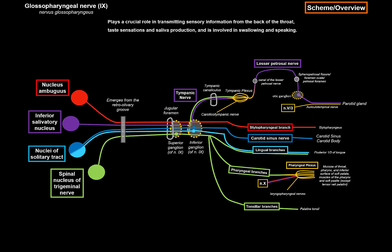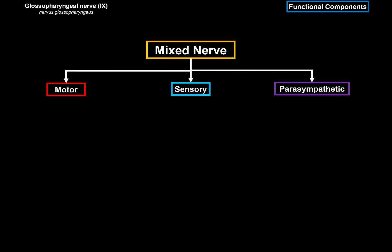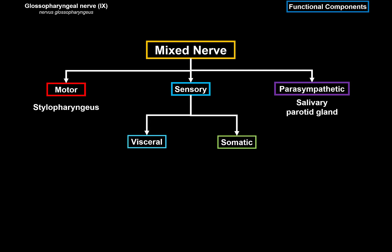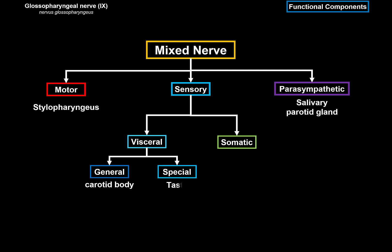This is the general scheme of the nerve. We divide it into functionally different components, which makes it easier to remember. The glossopharyngeal nerve is a mixed nerve with a motor component, sensory component, and a parasympathetic component. The motor component innervates the stylopharyngeus muscle, and the parasympathetic fibers go towards the parotid gland for saliva production. The sensory is subdivided into visceral and somatic parts. The visceral part has general visceral sensory fibers from the carotid bodies and special visceral fibers for taste from the posterior one-third of the tongue. Somatic sensory fibers come from the pharyngeal and middle ear regions.